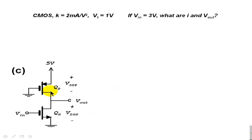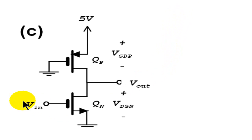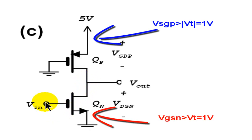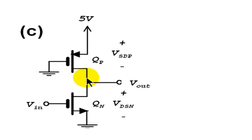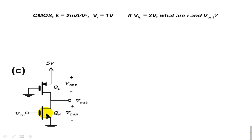Let's look at part C. This time the input voltage is 3 volts. The gate is higher than the source of the N transistor by 3 volts. In the P transistor, the gate continues to be lower than the source by 5 volts, so this situation is asymmetric. In either case, the gate-source voltage in both is greater than the VT of 1 volt, meaning neither transistor is in cut-off. There is current flowing — there is a channel of conduction in each one of those transistors.